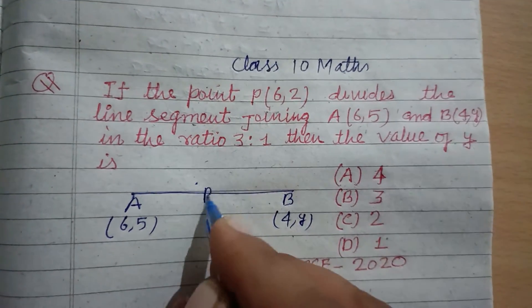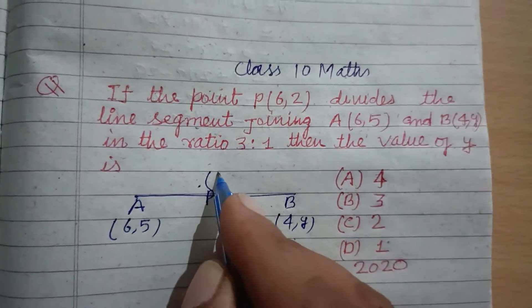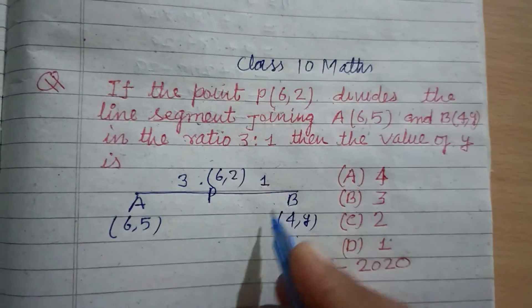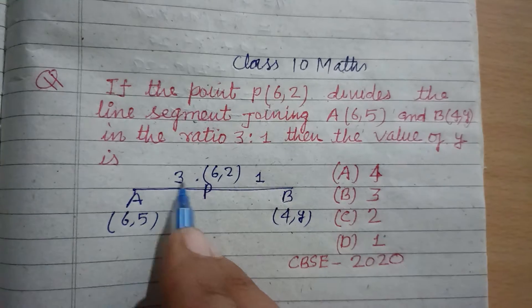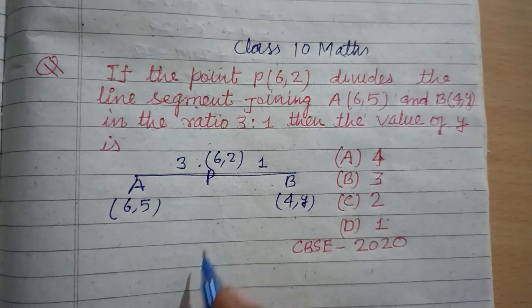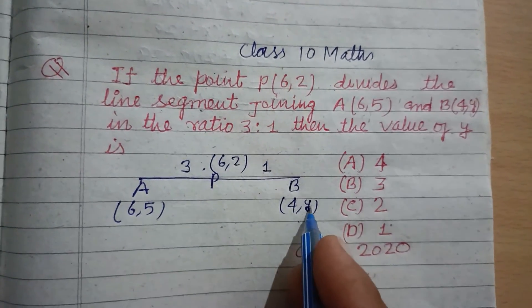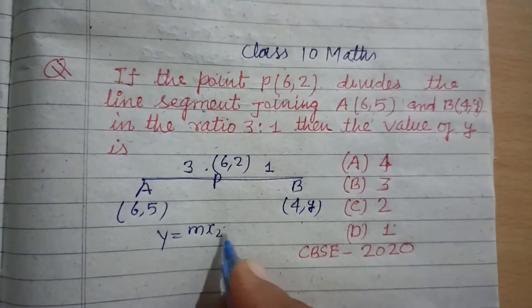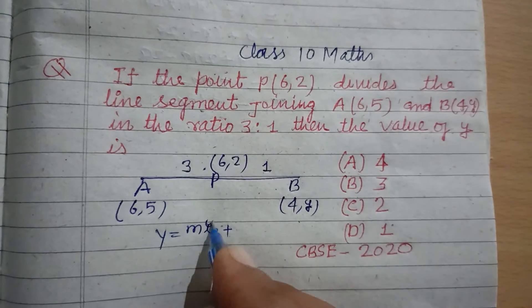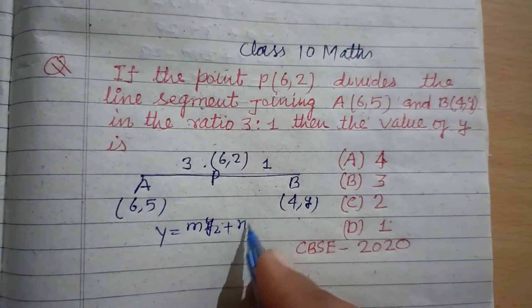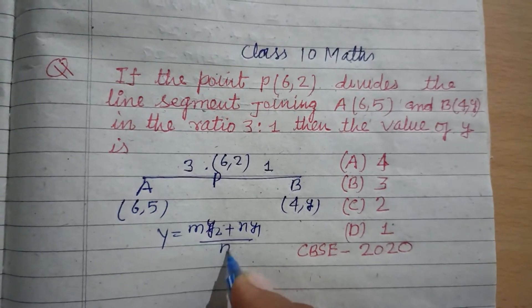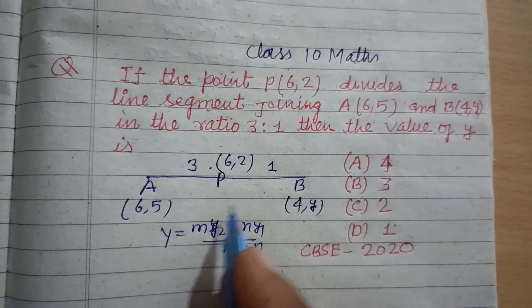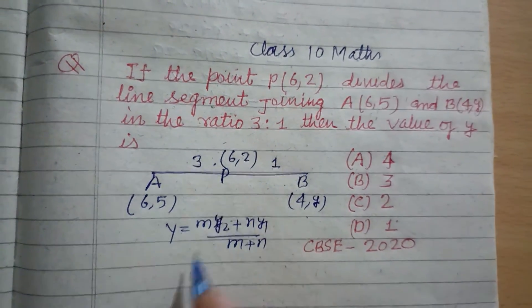Point P, which is (6,2), divides this A and B in ratio 3:1. So using the section formula for y: y equals (M·y2 + N·y1) over (M + N). Here y is given to us as 2.